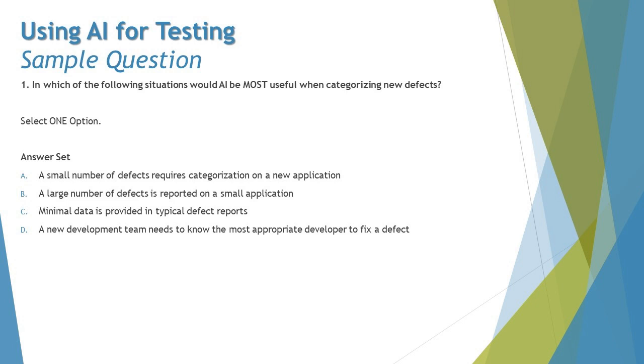This question is all about categorizing a new defect. Let's see the options right here. Option A says a small number of defects requires categorization of a new application. I think this option is slightly disturbed with what exactly we are looking forward to. Where a small number of defects requires categorization and there's no historical data, AI would not have training data to be used. I certainly need some kind of past information, some kind of historical data to get some insights.